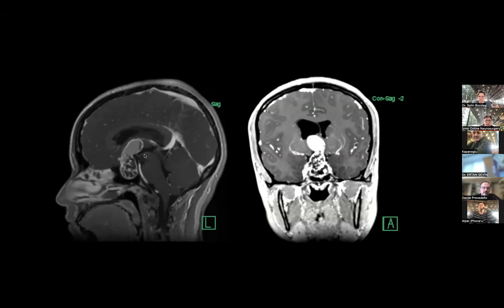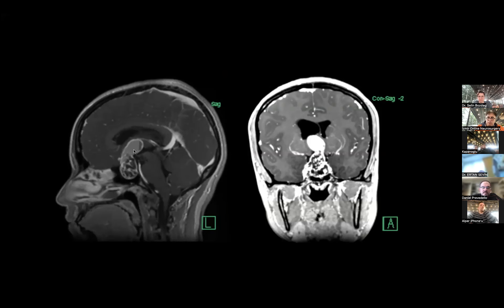I described this in a manuscript: if you look at the brainstem, it looks like a bird with a beak. The beak points to the floor of the third ventricle. If the beak is pointing up, the floor is elevated — meaning disease is pushing it up. If the beak is pointing down, the tumor is just inside the third ventricle. This is very important information I use to plan surgery.